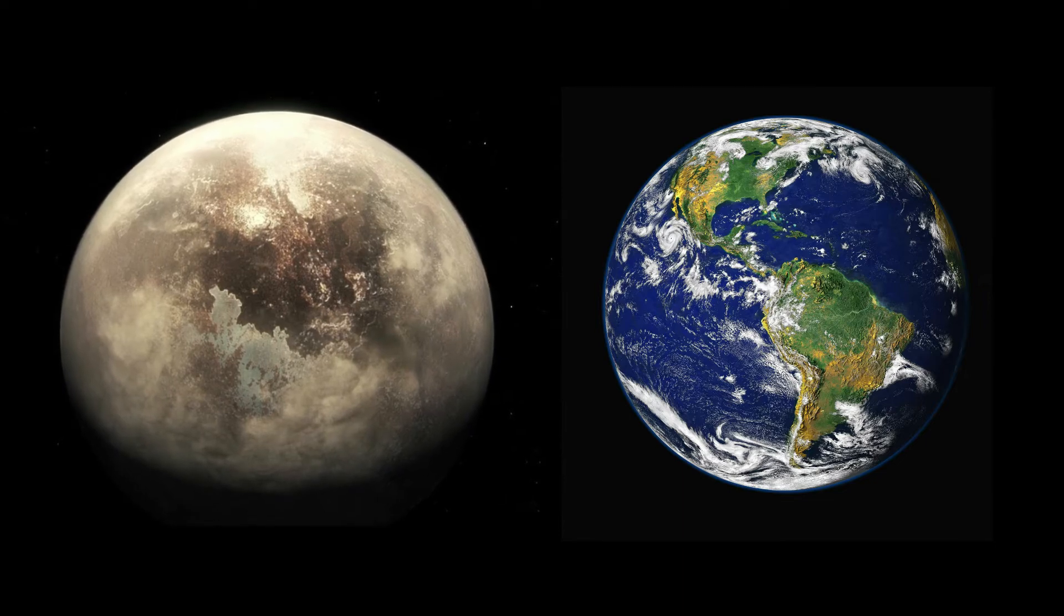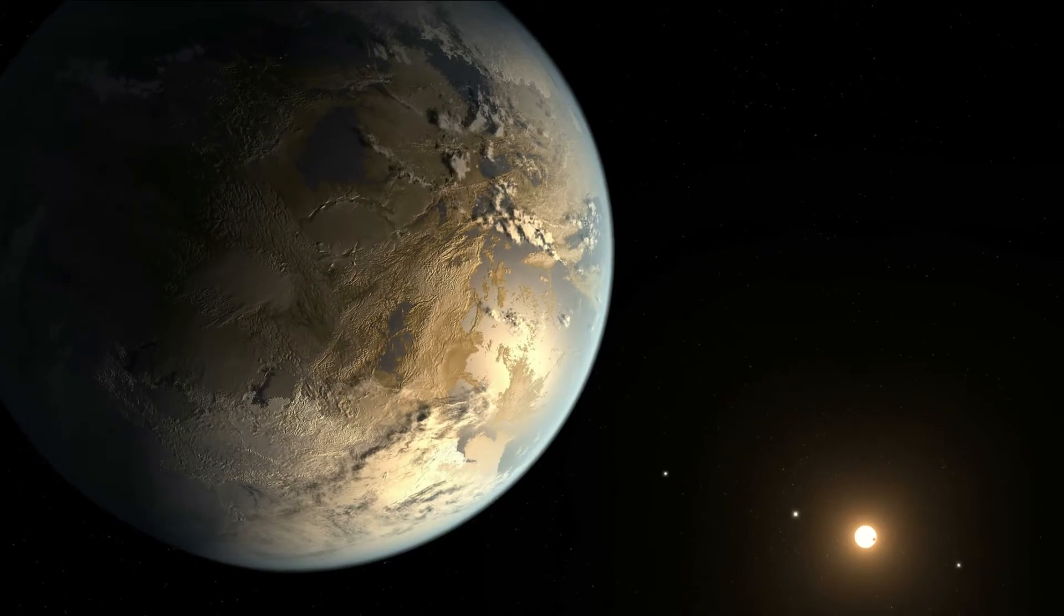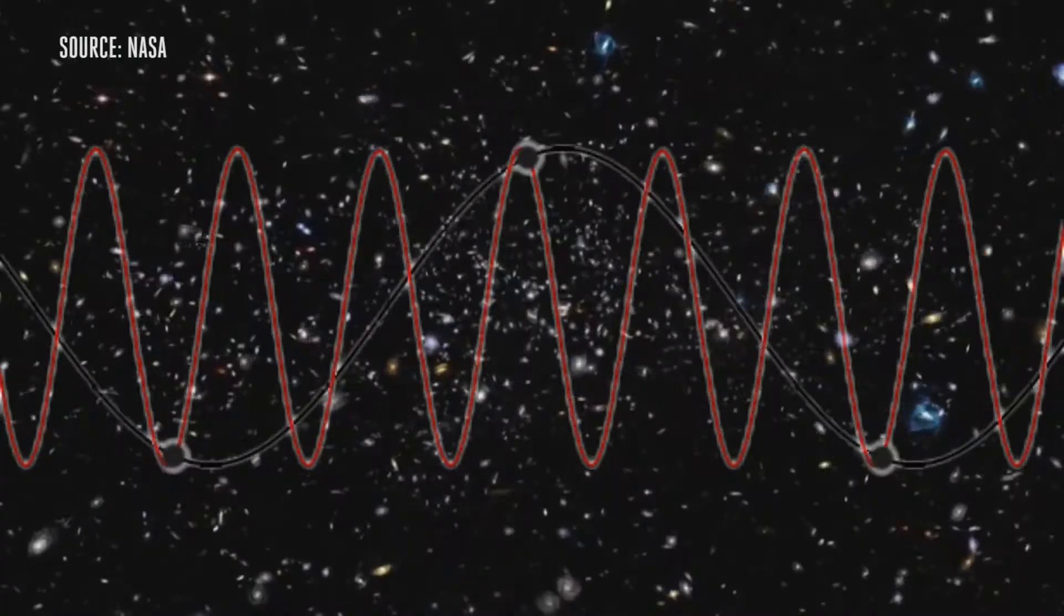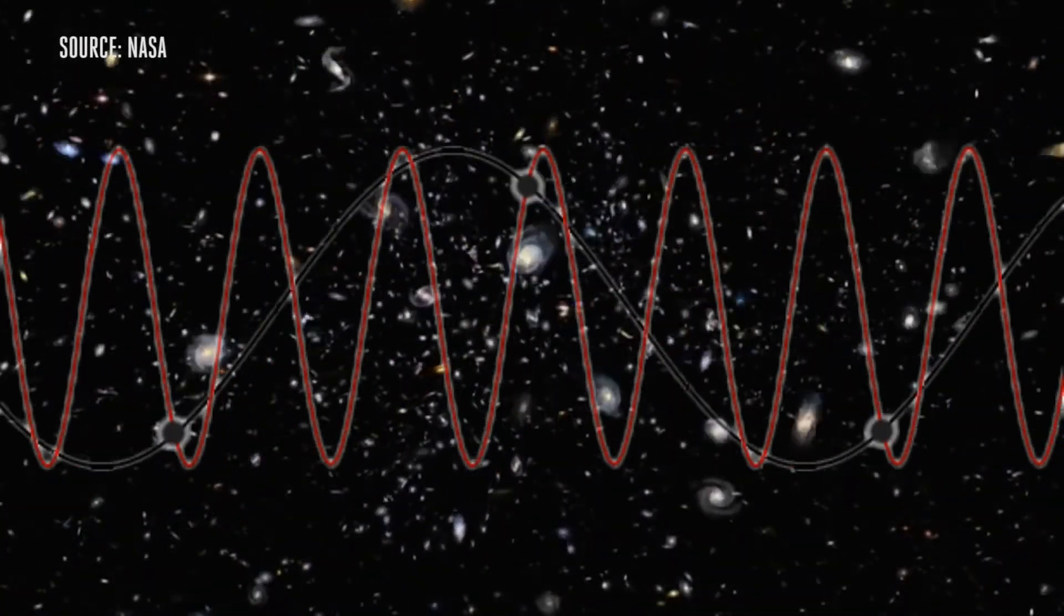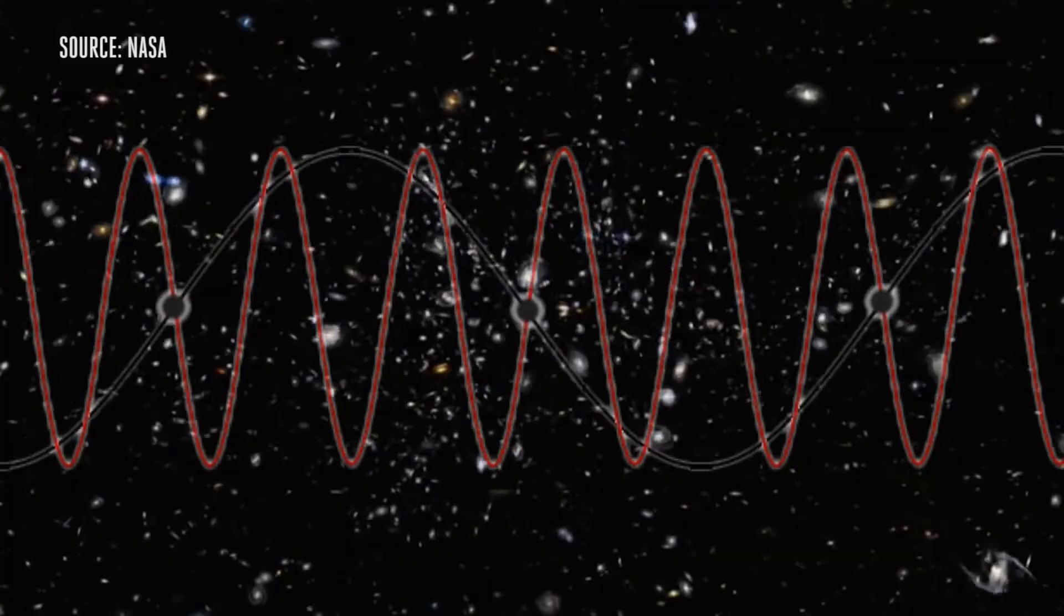Ross 128b may not be Earth's exact twin, but it does seem to share similarities with our own world, and some researchers believe there is life on this planet. In the spring of 2017, astronomers detected strange radio signals coming from around this planet. Maybe this was from aliens or something, a mysterious phenomenon.